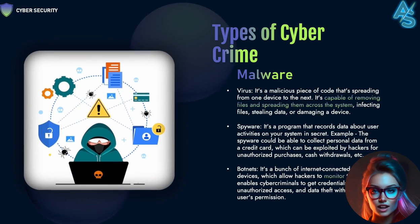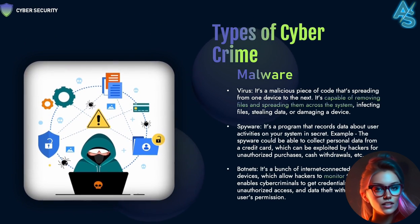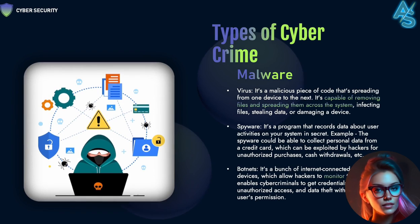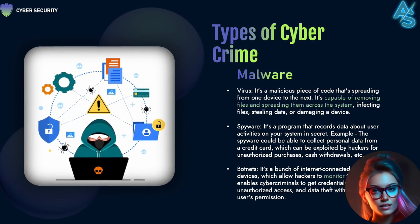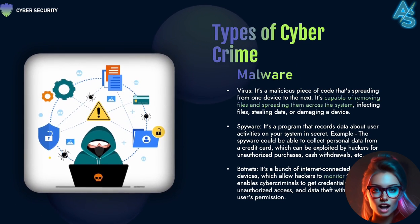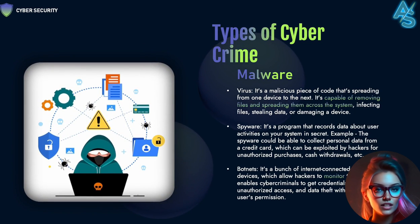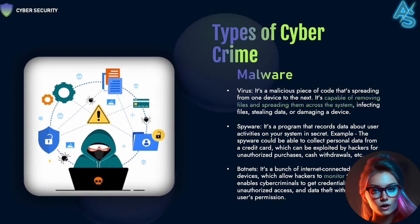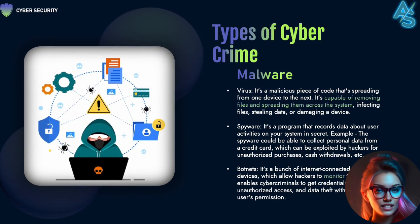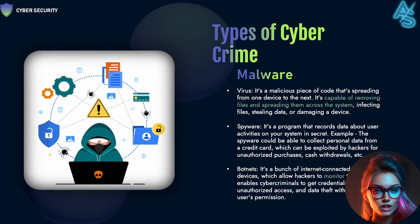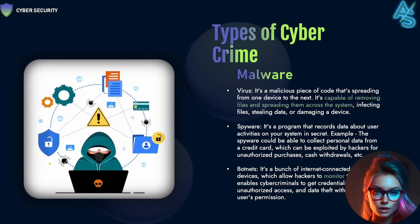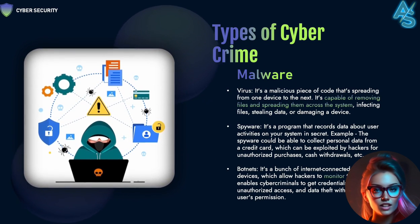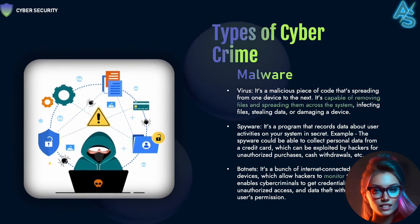Types of cybercrime — Malware. Three types of malware are viruses, spyware, and botnets. A virus is a malicious piece of code that spreads from one device to the next and is capable of removing files across the system. Spyware is a program that secretly records user activities, for example collecting personal data like credit card information. A botnet is a group of internet-connected malware-infected devices that allow hackers to monitor them, enabling credential leaks and unauthorized access.